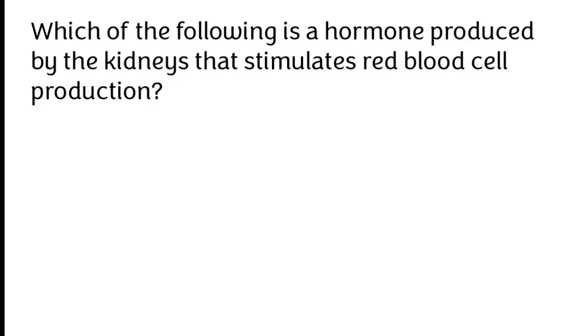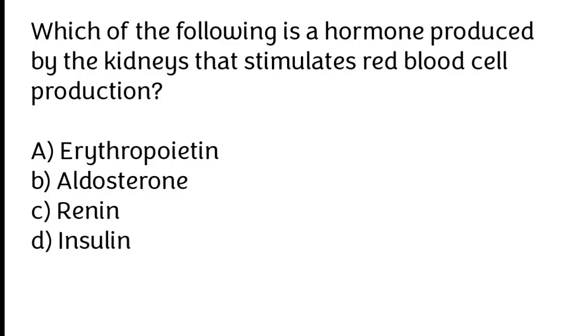Which of the following is a hormone produced by the kidneys that stimulates red blood cell production? A) Erythropoietin, B) aldosterone, C) renin, D) insulin.